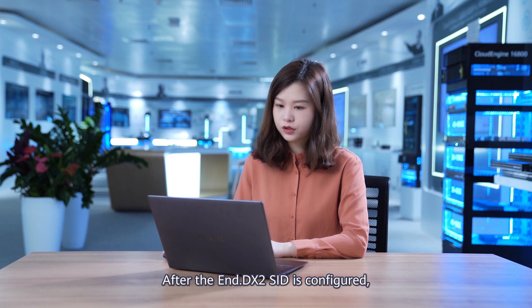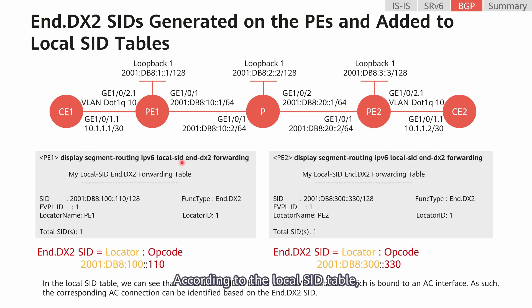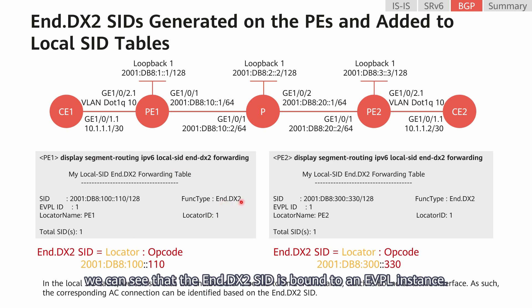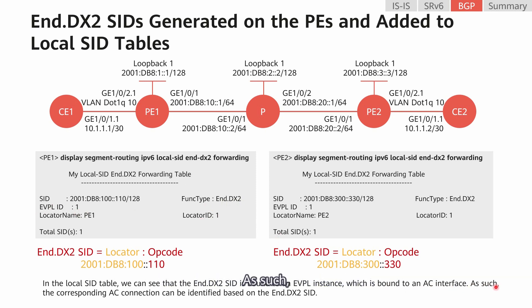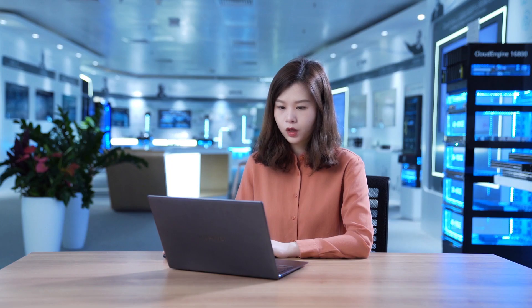After the End.DX2 SID is configured, a local SID table is generated on the PE. According to the local SID table, we can see that the End.DX2 SID is bound to an EVPL instance. The EVPL instance is bound to an AC. As such, we can identify the corresponding AC connection based on the specified End.DX2 SID.